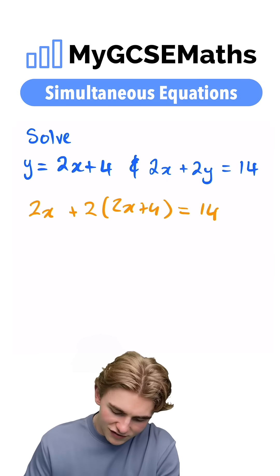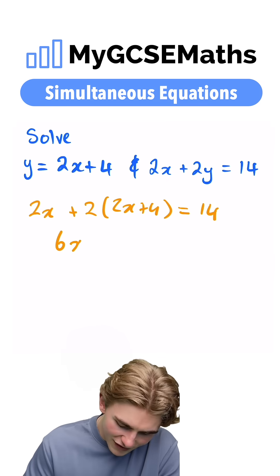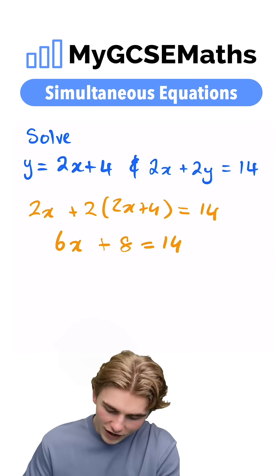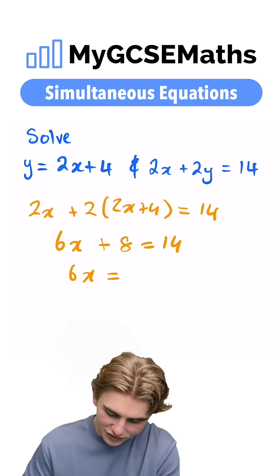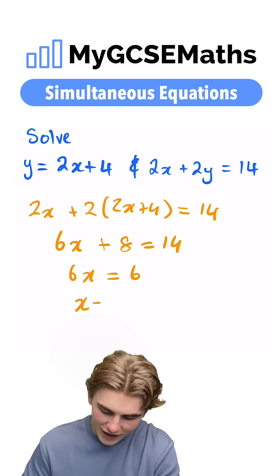We can then expand these brackets and collect like terms. We're going to get 6x plus 8 equals 14. We can then subtract 8 from both sides. 6x equals 6 and then divide both sides by 6. We're going to get x equals 1.